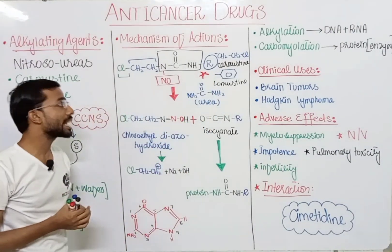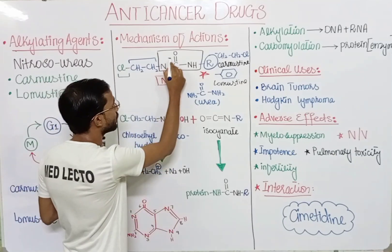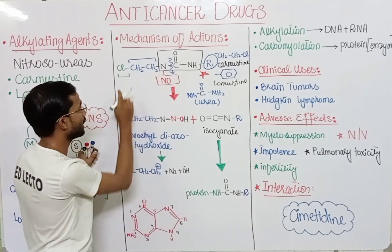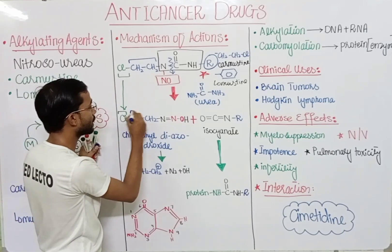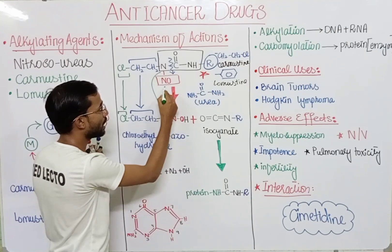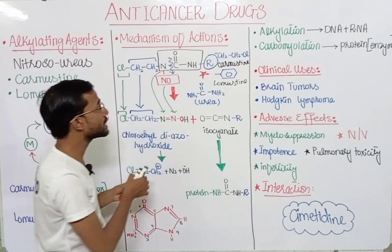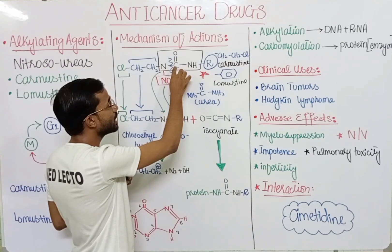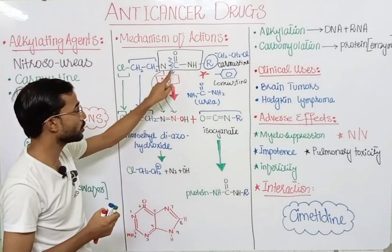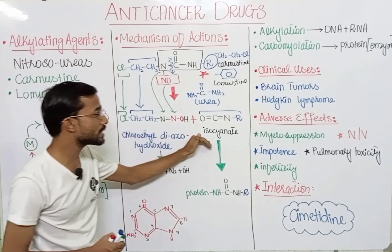This compound will break into two compounds at the position adjacent to the carbonyl group. It will form two compounds: the first contains chlorine and an ethyl group with a nitrogen-NO portion — this forms chloroethyl diazohydroxide. The hydrogen will be added to compensate the oxygen charge. The second part contains the R group with a C double bond O and NH, which will form the isocyanate group.